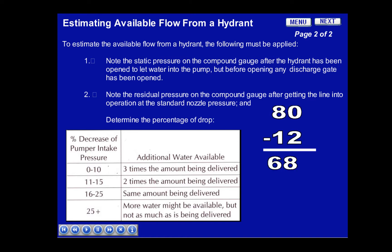In this case, we'll use 80 as our static pressure. After we supplied one fire attack line, we noticed a drop in our intake pressure of 12 pounds, which left 68 psi as our residual pressure.